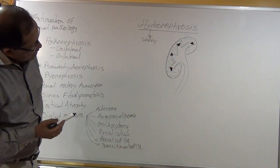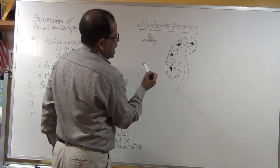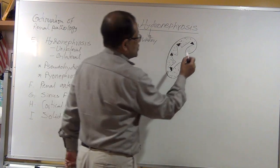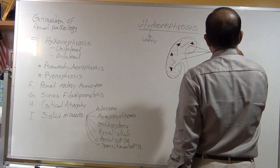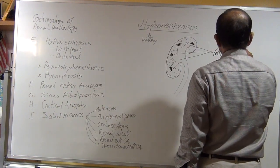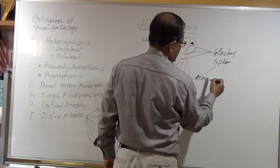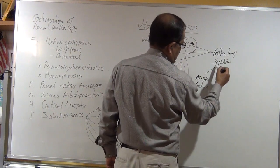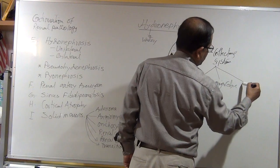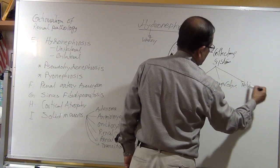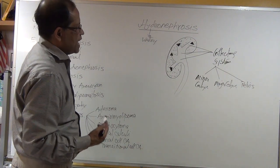You can differentiate the cortical area, the medullary pyramids, and the collecting system. The collecting system consists of the minor calyx, major calyx, and the renal pelvis — three structures where fluid can be collected.